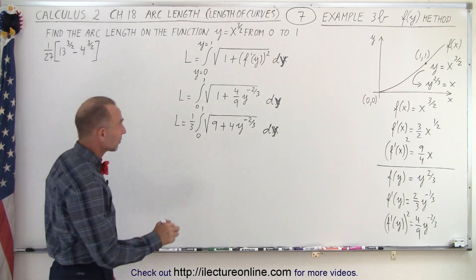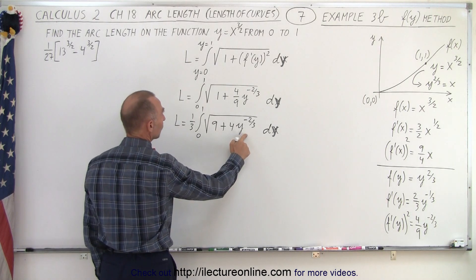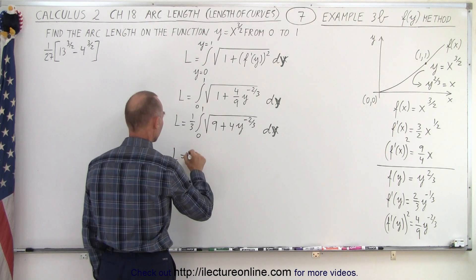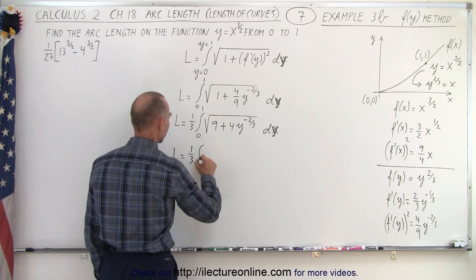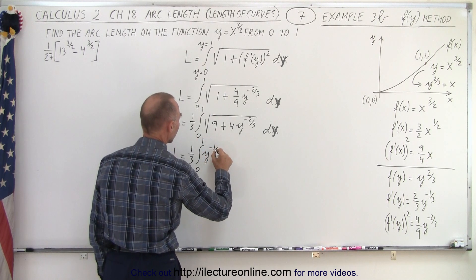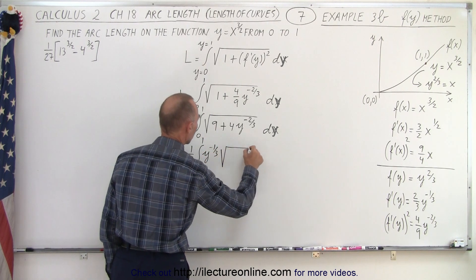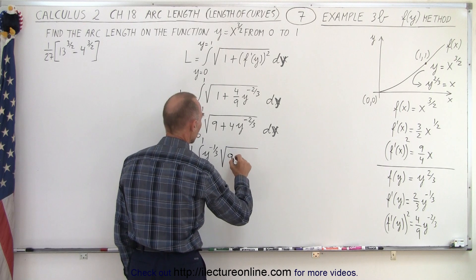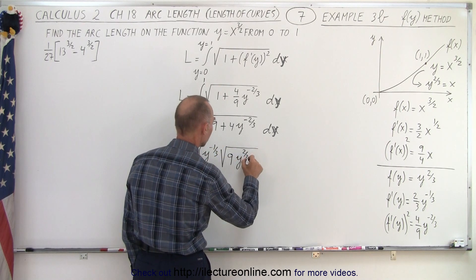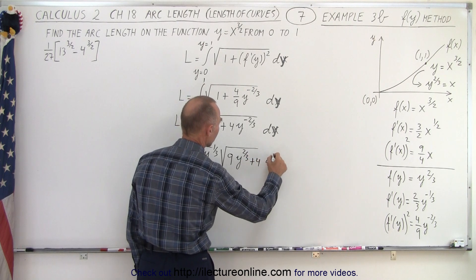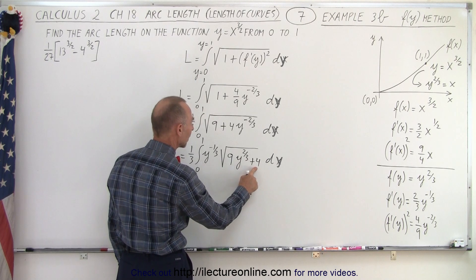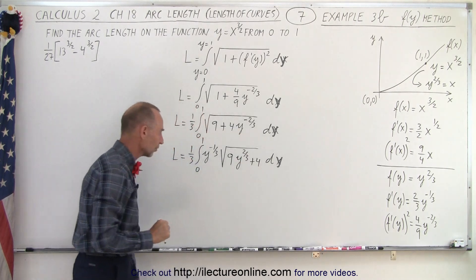Next we're going to factor out a y to the minus 2 thirds. It comes out here and becomes y to the minus 1 third. So L is equal to 1 third times the integral from 0 to 1 of y to the minus 1 third times the square root of 9 y to the 2 thirds plus 4, dy. If we multiply those factors back together we get 9 and plus 4 y to the minus 2 thirds — that checks out.